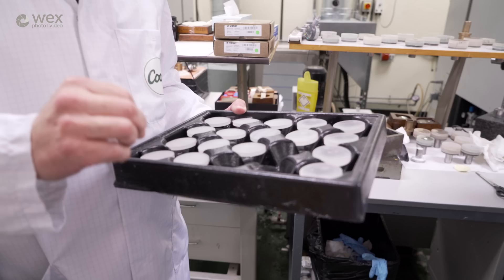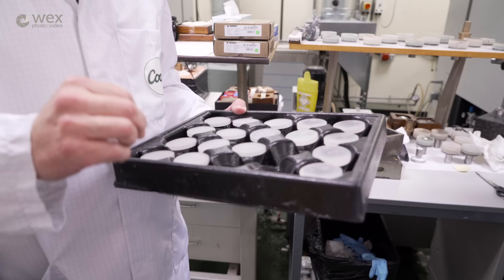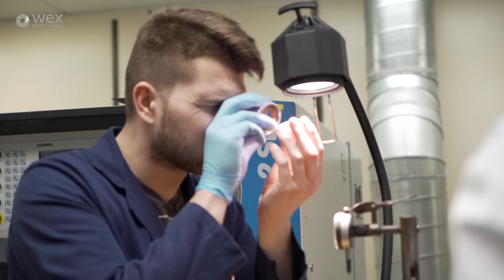We started the tour in the polishing room, where the glass arrives from one of two suppliers. The glass comes in a rough state, isn't treated and is larger than what will be needed, so the first step is to polish them up.